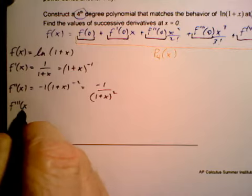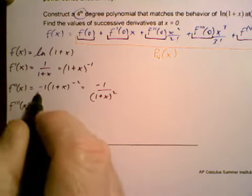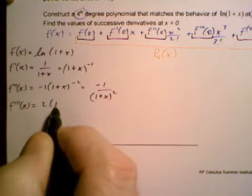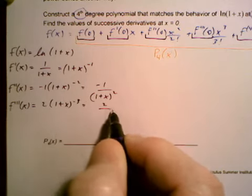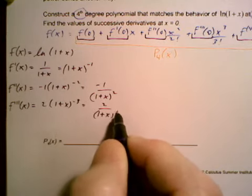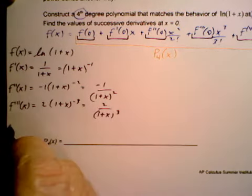f triple prime of x is equal to, again, negative 2 times negative 1 is 2. Multiply by 1 plus x to the negative 3. And I'm going to rewrite that as 2 over 1 plus x to the third.